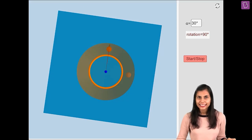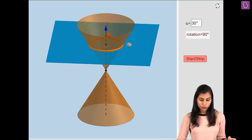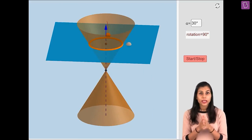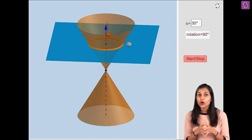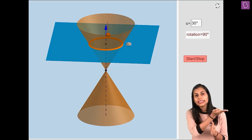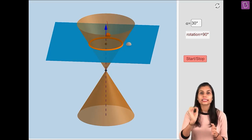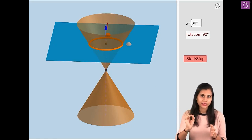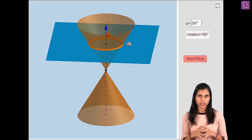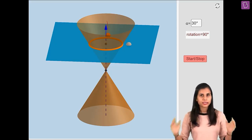One little disclaimer before moving ahead: in order to obtain a circle, the cutting plane was entirely cutting across one single nap at a time — either just the upper nap or just the lower nap. Keep this in mind.